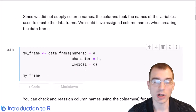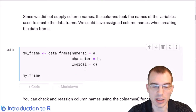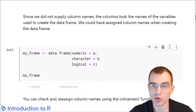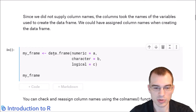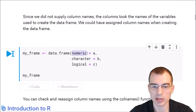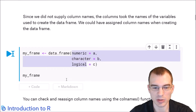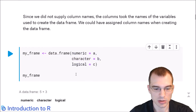If we wanted to give the columns different names at the time of creation, we could use this construction. Similar to the list construction, with data.frame, if you want to use, say, 'numeric' as the name of the first column, we'd use that as the name and set it equal to the values. Then 'character' and 'logical'. So now these will be the names of the columns instead of A, B, and C.